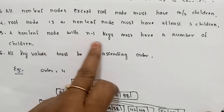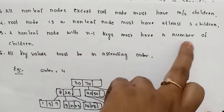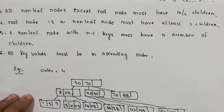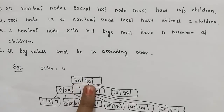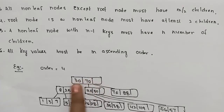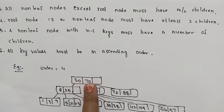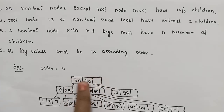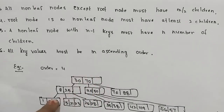The next property: a non-leaf node with n - 1 keys must have n number of children. So if a node is a non-leaf node with n - 1 keys, it must have exactly n children.